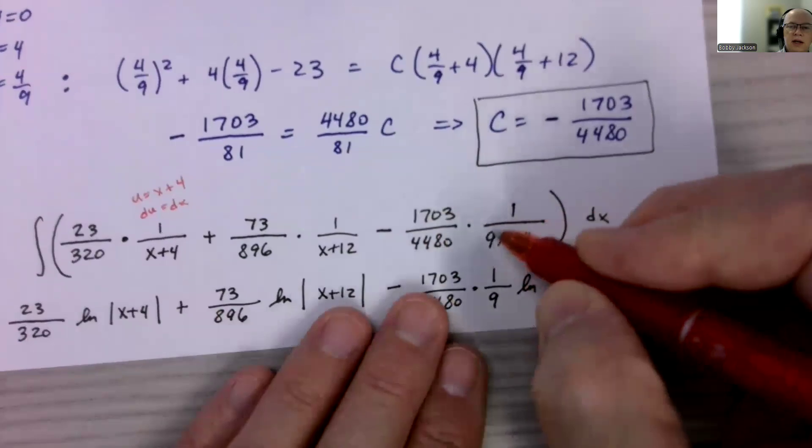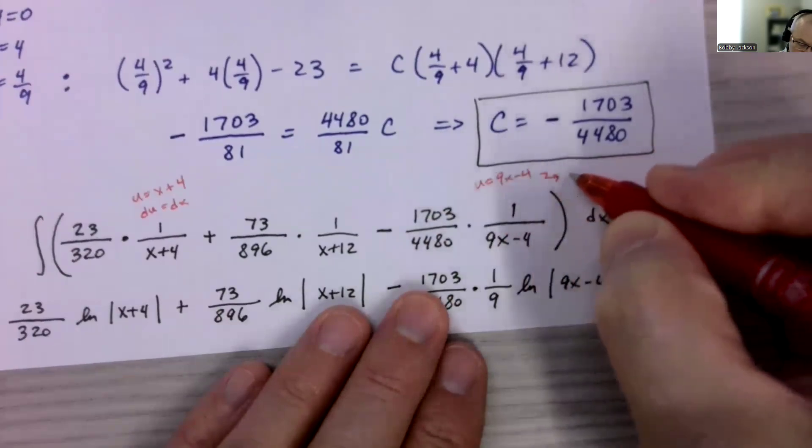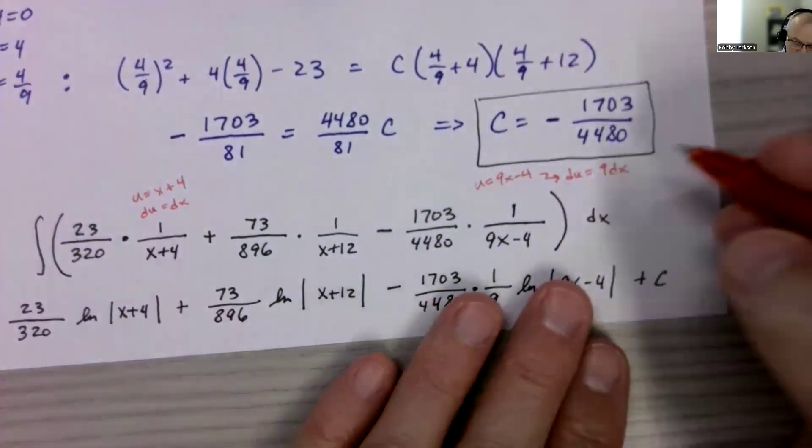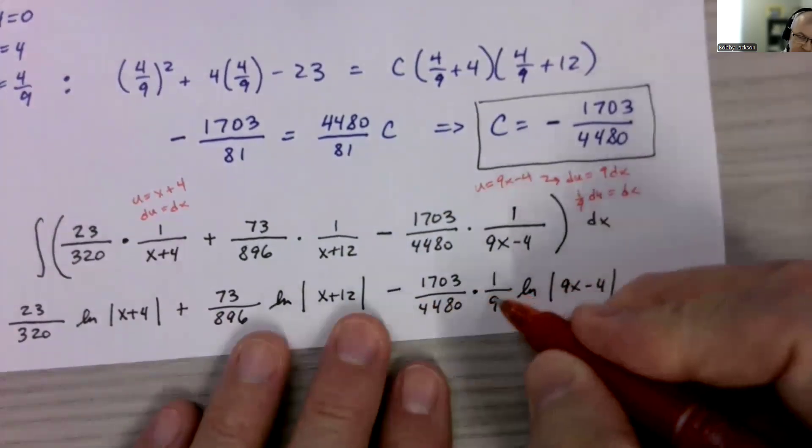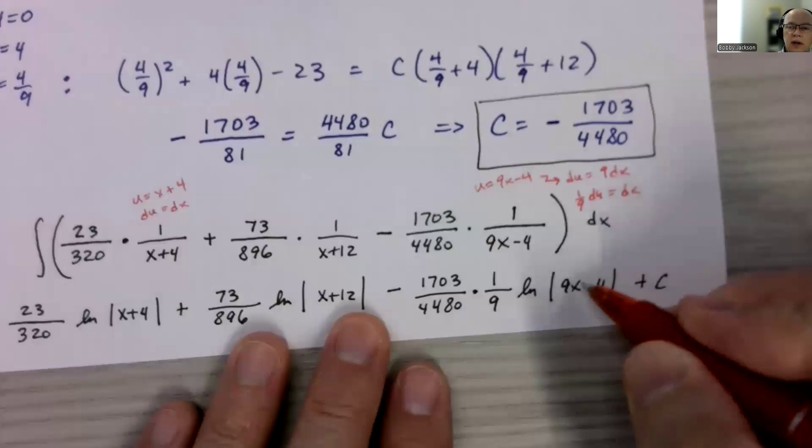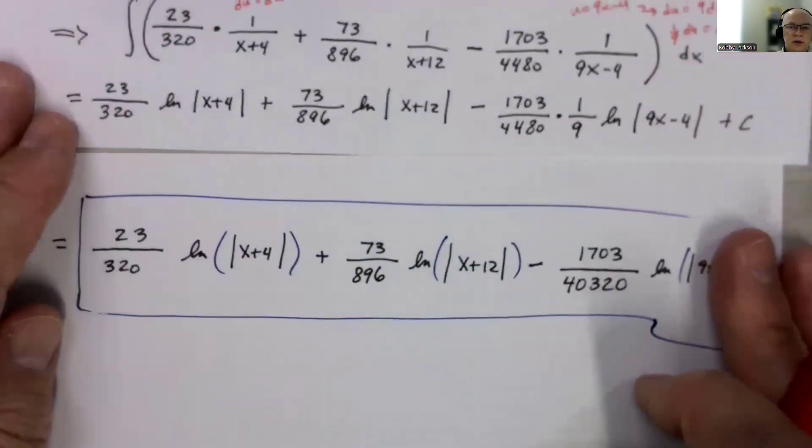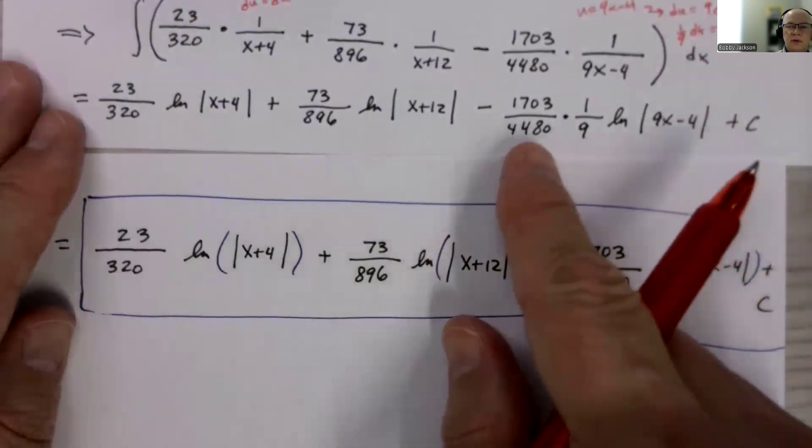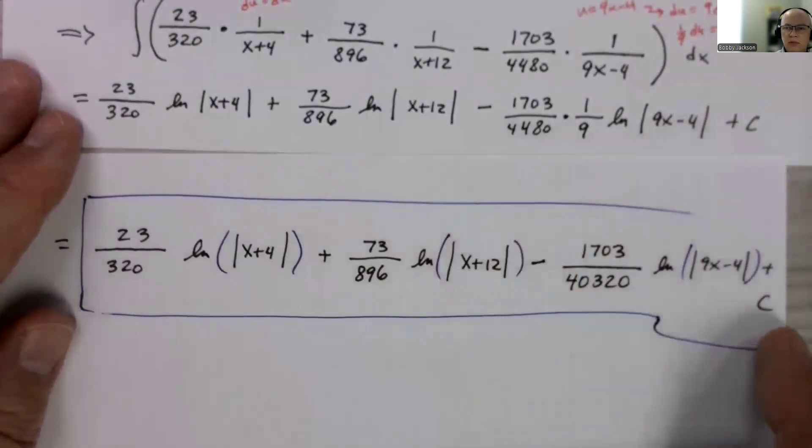Now, be careful here. I've got this minus this constant multiple. And then here, if I let u be 9x minus 4, I get 1 over u. However, the du is 9 dx, which means 1 ninth du is going to be dx. And so I've got a 1 ninth out here, times the natural log of absolute value of u. And so cleaning that all up, I get the following expression. I had to go to the next page. All these are the same. And then just multiplying 9 times the 4480 gives me that denominator. What a lovely number. Plus my C at the end.